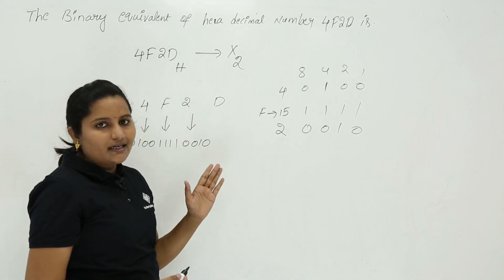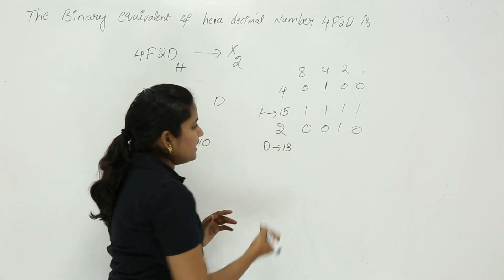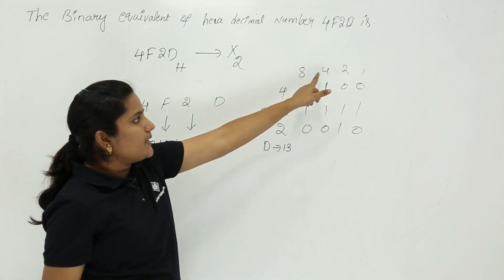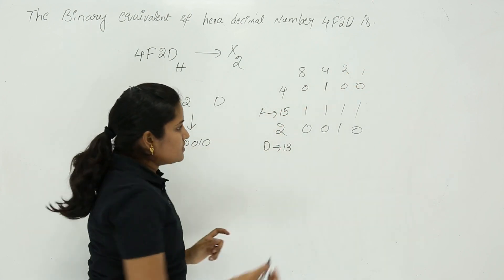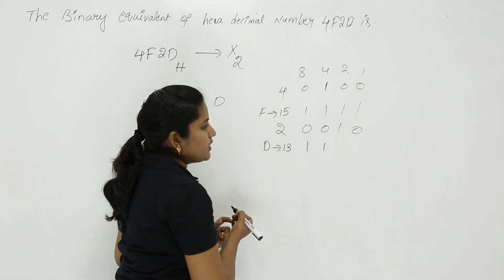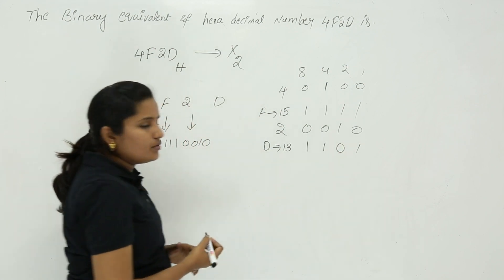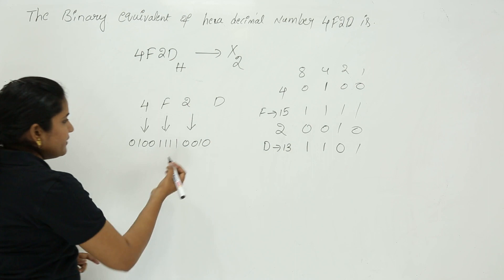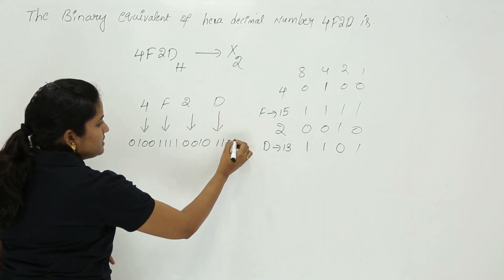Finally, for D: A is 10, B is 11, C is 12, D is 13. So D means 13. For 13, what places do you need? 8 + 4 = 12, and 12 + 1 = 13. The remaining place you don't need is 2, so put 0 there. For D, you can directly write the binary code 1101.